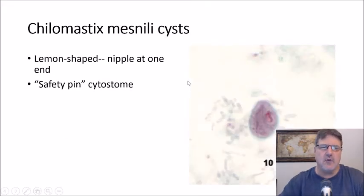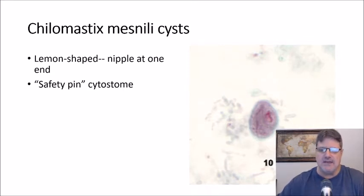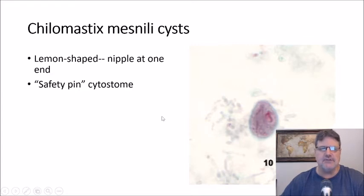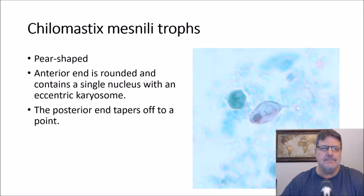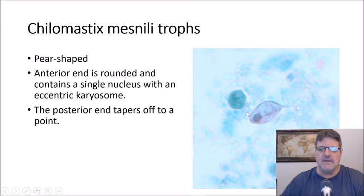Chilomastix is quite characteristic in the cyst stage — it's lemon-shaped and has a nipple at one end. Inside you have a safety pin-shaped cytostome, so it's very characteristic and not hard to identify. The trophozoite is more pear-shaped; the anterior end contains a large single nucleus with an eccentric karyosome, and the posterior end tapers off to a point.